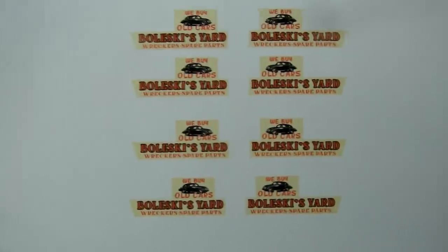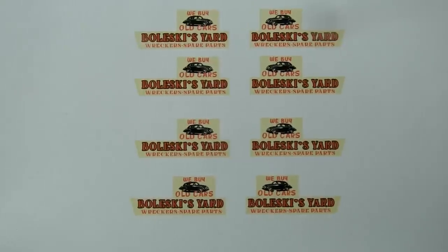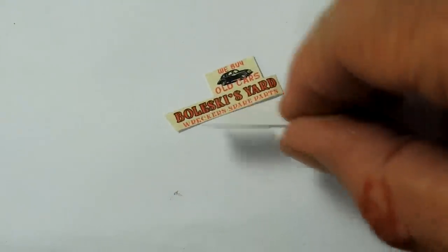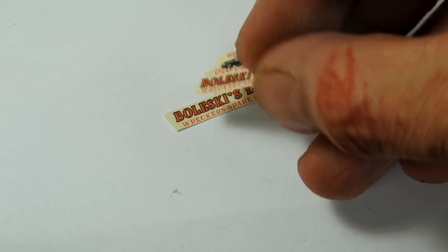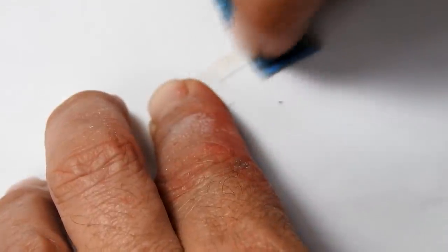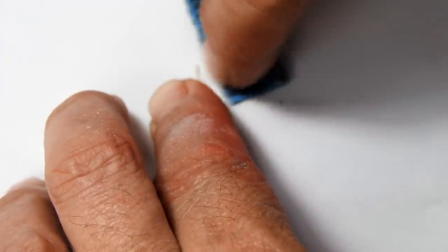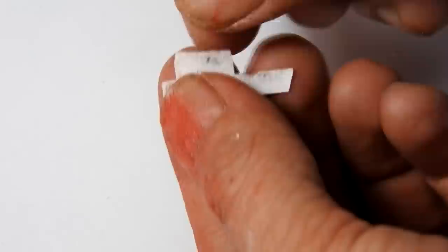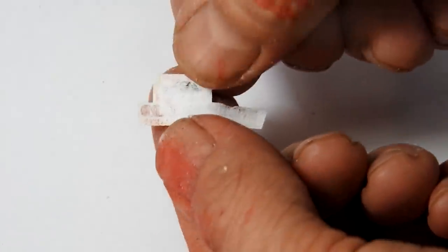And I've made some signs to go on the side. I've printed these on some A4 paper. Next I'm going to use some 100 grit sandpaper to sand them down so that they're almost transparent.